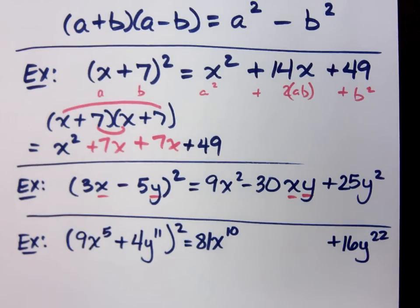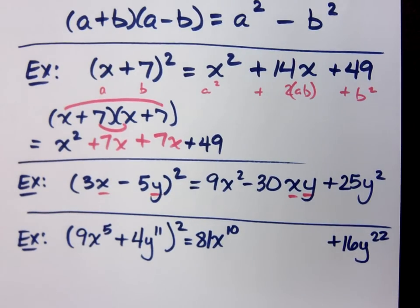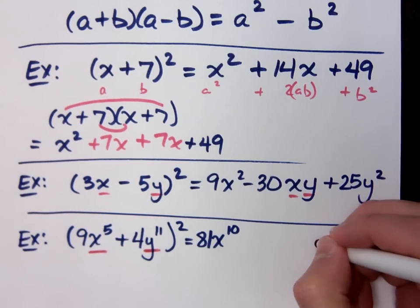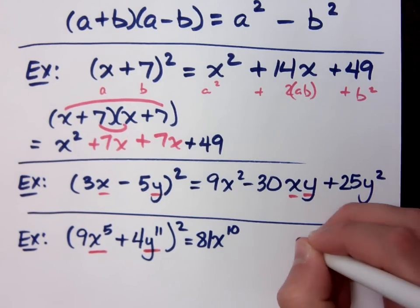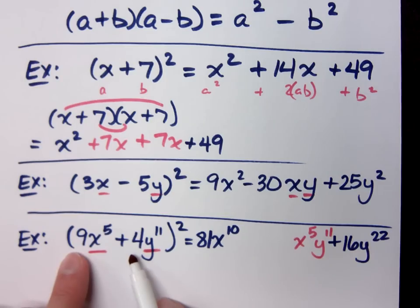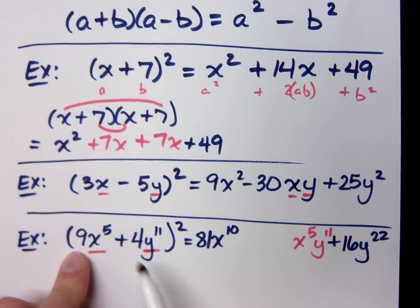It's the middle term that always messes with us. All you need to worry about is the coefficient, because I'm going to tell you right now, these variable components that you see will go down just the way you see them, x^5, y^11. These coefficients, you multiply those, and then you multiply that result times 2. So what do you get? 9 times 4 is 36, times 2 is 72.